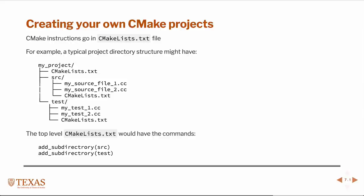If you want to create your own CMake projects or applications using CMake, here are some simple examples. If you have a directory structure like myproject, in the root you'd always have a CMakeLists.txt file. It's typical to include all source code in a folder called source and another folder called tests. Each of these would have their own CMakeLists as well. In the top-level directory, you include the subdirectories using the add_subdirectory command pointing to tests and source.